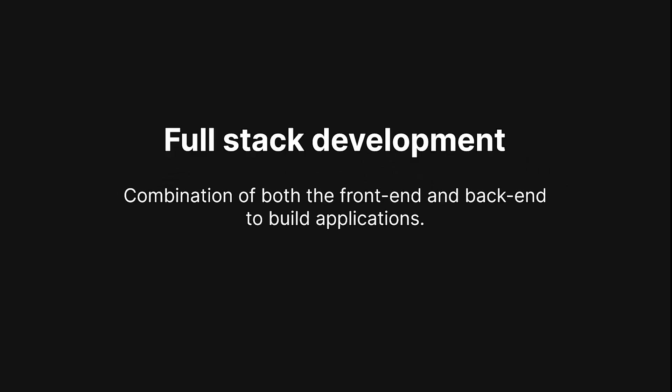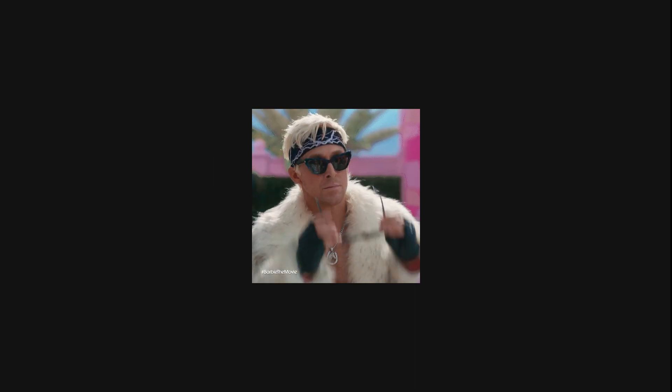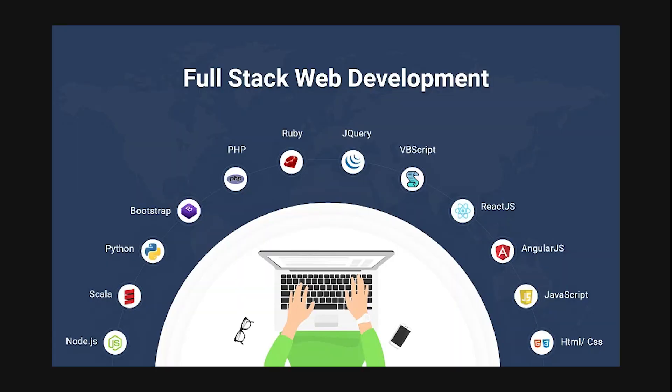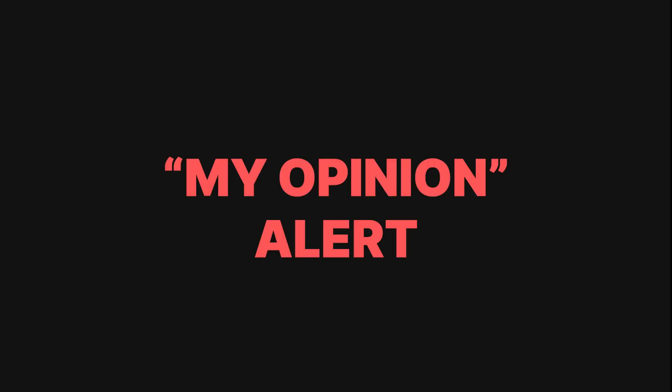Full-stack development is basically just using both the front-end and the back-end to create your web applications. Now that you have a basic understanding of how the front-end and the back-end works, let's take a look at the technologies that you could use to build such an application. You're not only limited to the technologies I mention — the JavaScript ecosystem is huge and there's a ton of choices. I'm just recommending the following since they're among the most used and you'll find a lot of community support behind them.